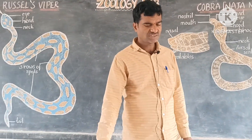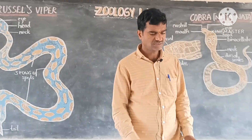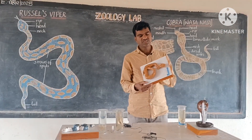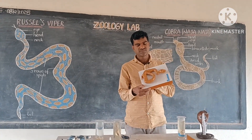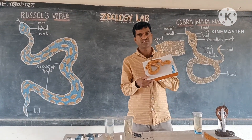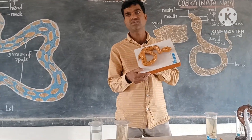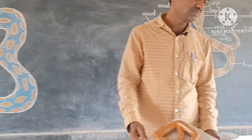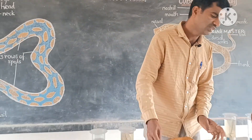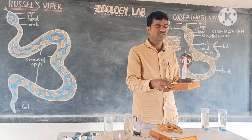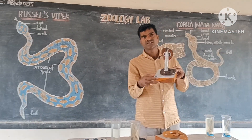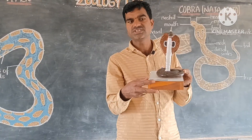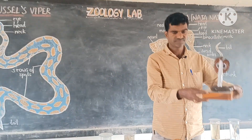We are observing the specimens of Russell's Viper. It is a model — we are not disturbing our ecosystem. This is a model of Russell's Viper, and next to it is the specimen of Cobra, which is also a model. In our geology lab, these are very important models.